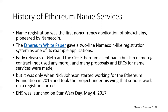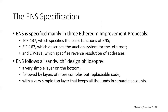ENS is specified mainly in three Ethereum Improvement Proposals: EIP-137, which specifies the basic functions of ENS; EIP-162, which describes the auction system for the .eth route; and EIP-181, which specifies reverse resolution of addresses. ENS follows a basic sandwich design philosophy — a very simple layer on the bottom, followed by layers of more complex but replaceable code, with a very simple top layer that keeps all the funds in separate accounts.